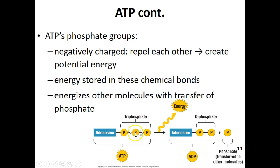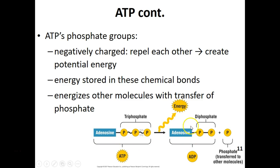The bond between the second and third phosphate in ATP wants to be broken, and if it does get broken, we release the energy. That potential energy is released to form kinetic energy — energy of motion, movement, or building up. When we break that bond, we produce adenosine diphosphate, or ADP. Di means two, so now we have the same adenine and ribose but only two phosphates, plus a free inorganic phosphate.